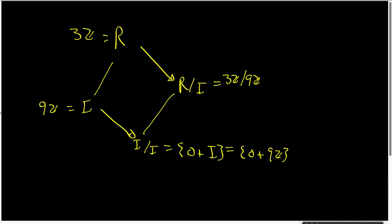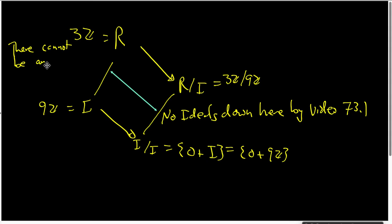Now, the correspondence theorem, I want to remind you, says there is a one-to-one correspondence between the ideals up here and the ideals down here. But there are no ideals down here. That's by video 73.1. And since there are no ideals down here, there cannot be any ideals up here by the correspondence theorem.